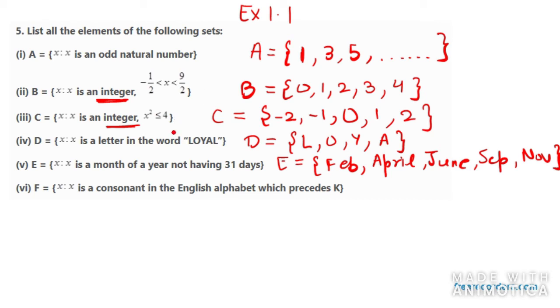Now in the sixth one, it says x is a consonant in the English alphabet which precedes K. So you need to write all the consonants which precede K. So in this we have first of all B, then C, then D. E is the vowel, so you don't need to write that. Then we have F, G, then we have H, then we have J. So you don't need to write the vowels in between.